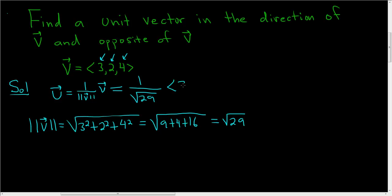And then we have our vector v, so 3, 2, 4. Let's go ahead and multiply. So this will be 3 over the square root of 29. So that takes care of the first part.